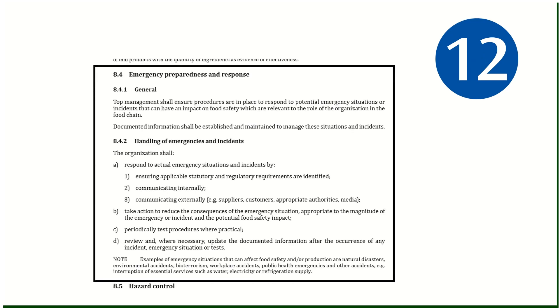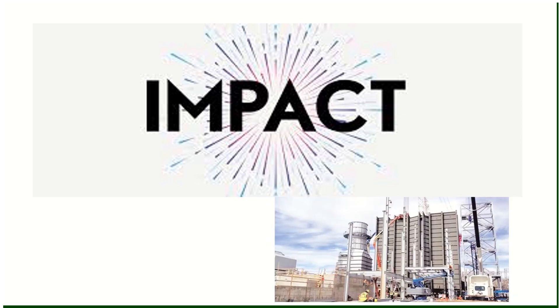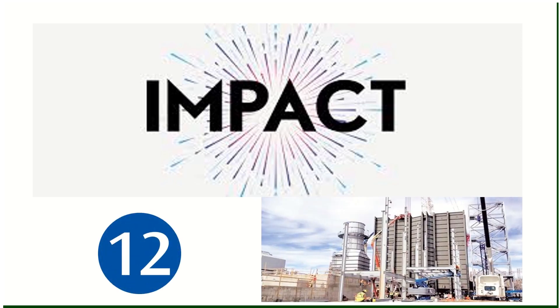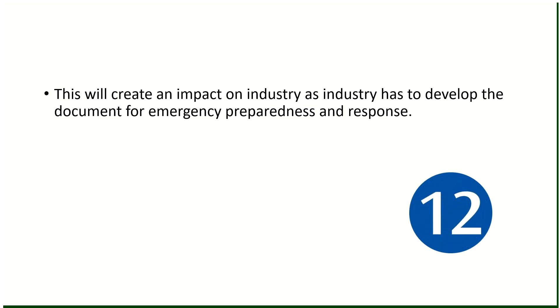Change number twelve: the emergency preparedness and response clause is now defined in detail. Previously it was just three lines in generic words. Now the new version requires specific things: documented information shall be maintained for emergency preparedness and response, applicable legal requirements must be considered, and priority tests need to be carried out. Impact: organizations must develop documentation for emergency preparedness and response, and carry out mock or periodic tests to check its effectiveness.